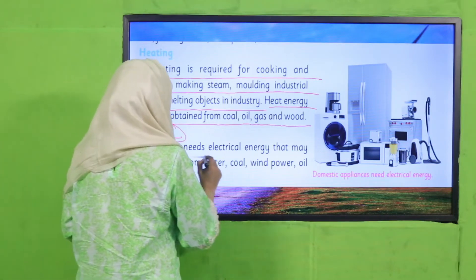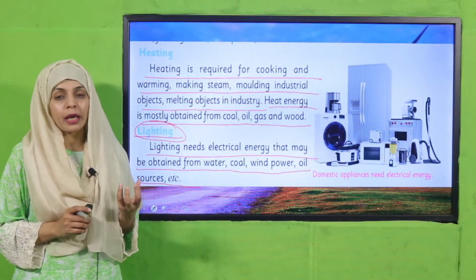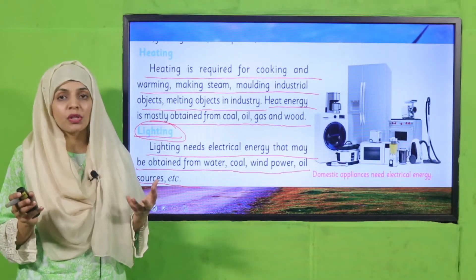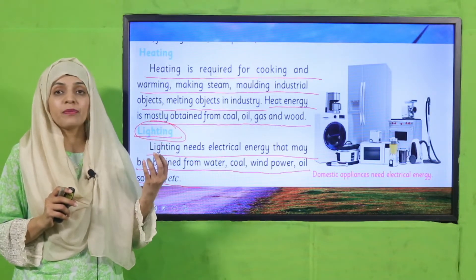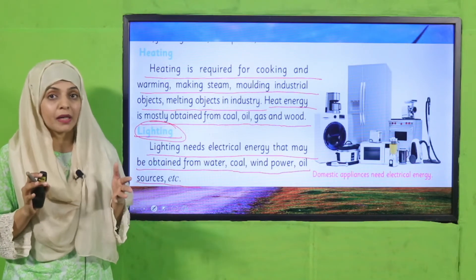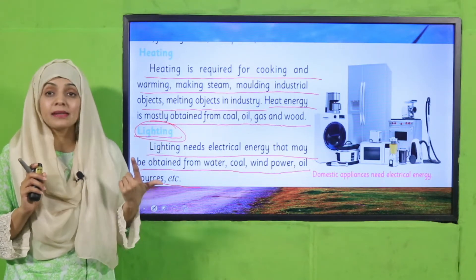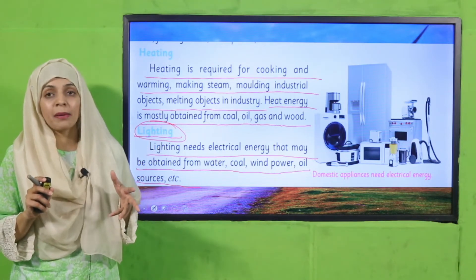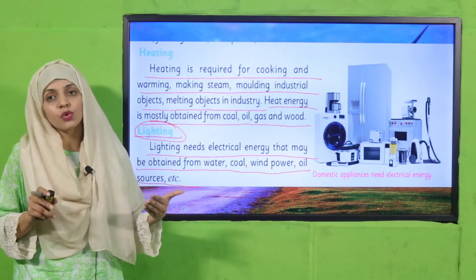Next is lighting. Lighting needs electrical energy, which may be obtained from water, coal, wind power, oil sources, etc. Electricity is very important and is produced from many things: water, wind, coal, petroleum, and natural gas. All of these help produce electricity, which provides lighting and runs different appliances. Electrical energy is basically generated by other energy sources.